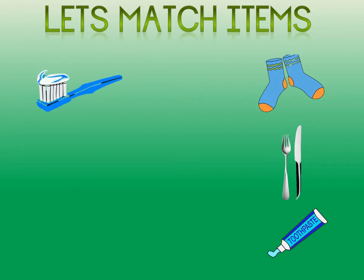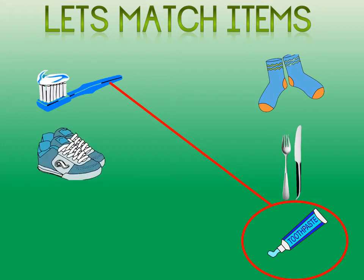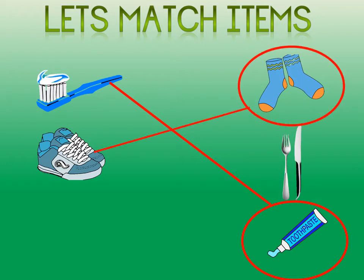Let's match items. I'm going to give you a few items that match with each other and you need to choose the correct one. A toothbrush — who do you think the toothbrush matches with? Yes, the toothpaste, because without the toothpaste we cannot brush our teeth. Next, we have a pair of shoes. Who do you think they match with? Yes, they match with the pair of socks, because without socks on our feet we can get blisters.